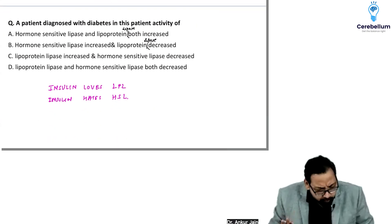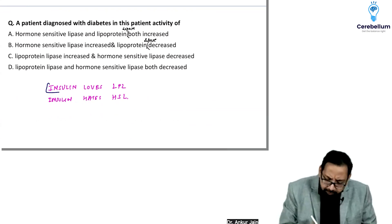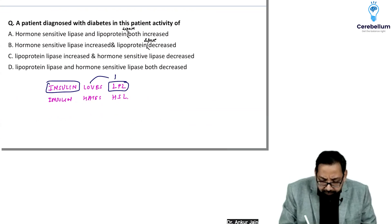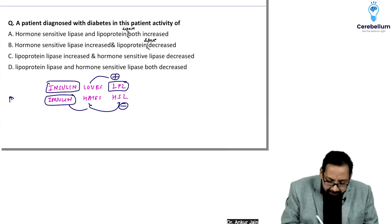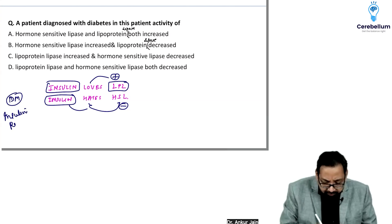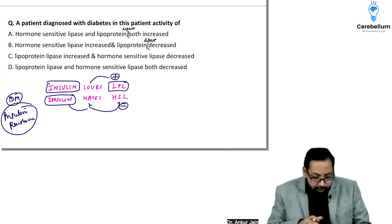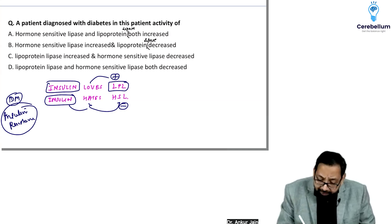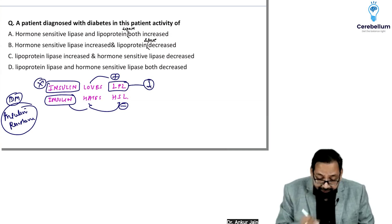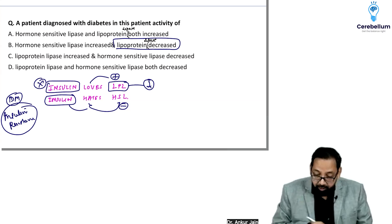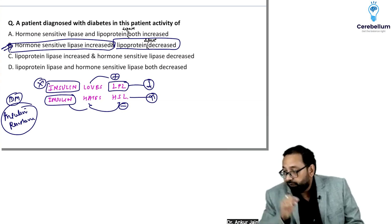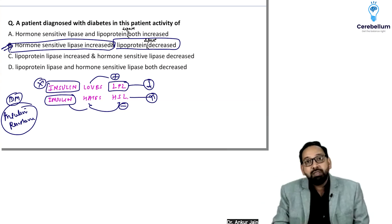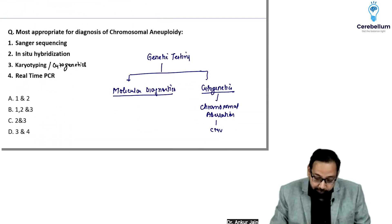This question is very simple. Mnemonic: insulin loves lipoprotein lipase, so insulin activates lipoprotein lipase. Insulin hates hormone-sensitive lipase, so it inhibits it. In diabetes with insulin resistance, insulin will not activate lipoprotein lipase, so lipoprotein lipase activity decreases. Hormone-sensitive lipase will not be inhibited, so its activity increases. Answer is B.